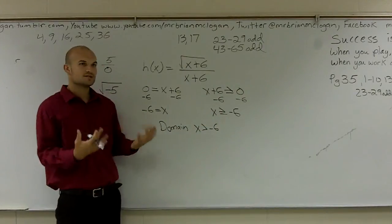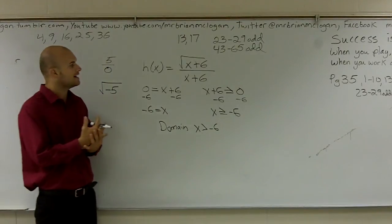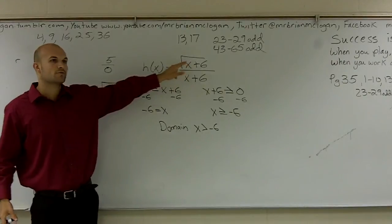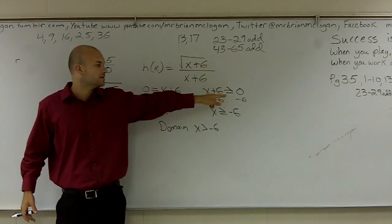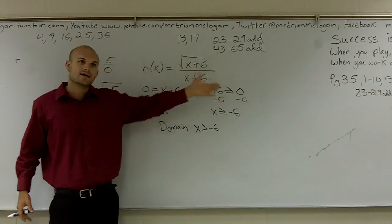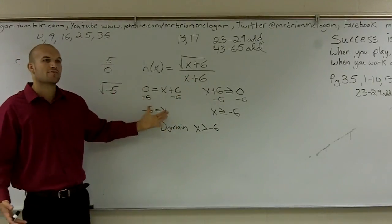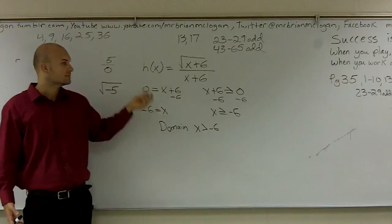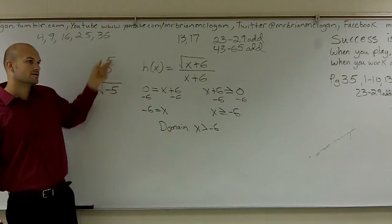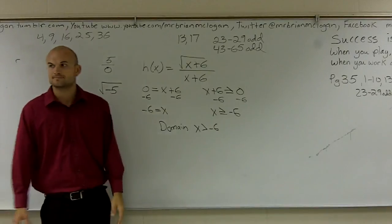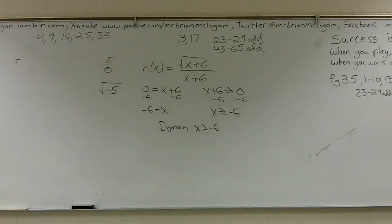Make sense? So when you're trying to find the domain, what we always want to do is set the bottom equal to zero and set whatever root you have to greater than or equal to zero. And solve for those values, and whatever those values are, those are not going to be a part of your domain. So just exclude them.